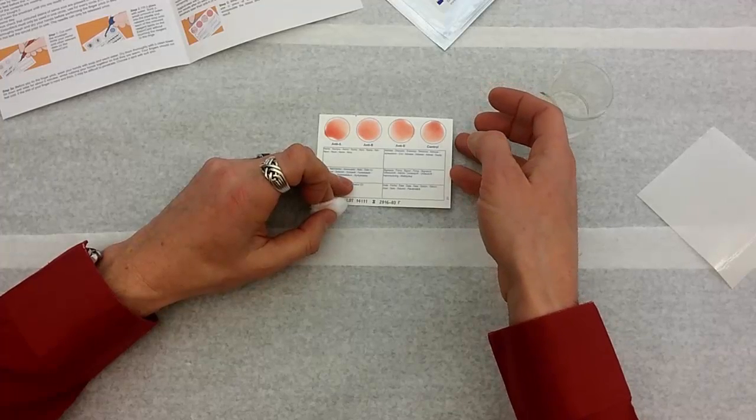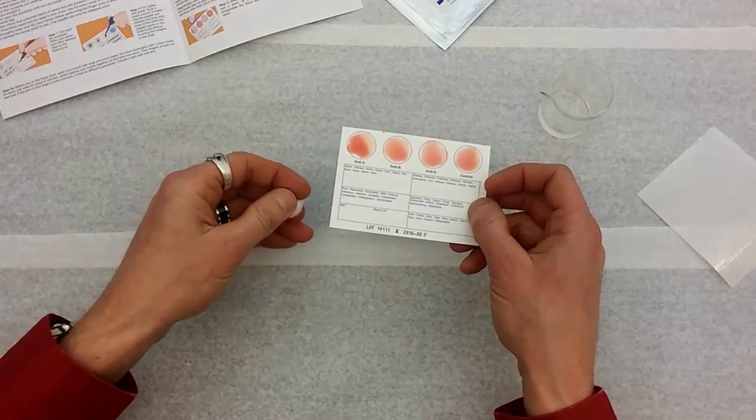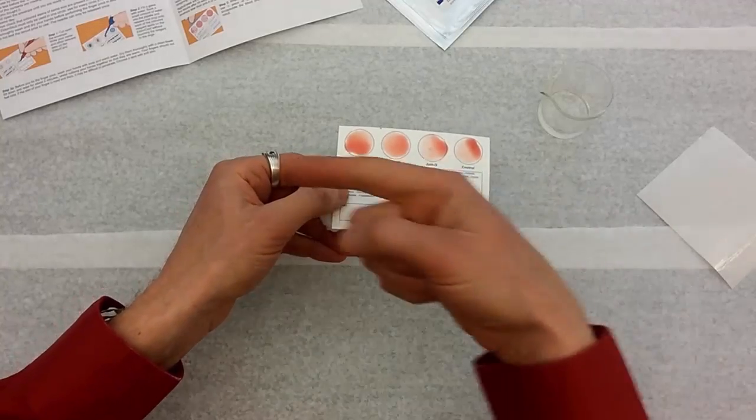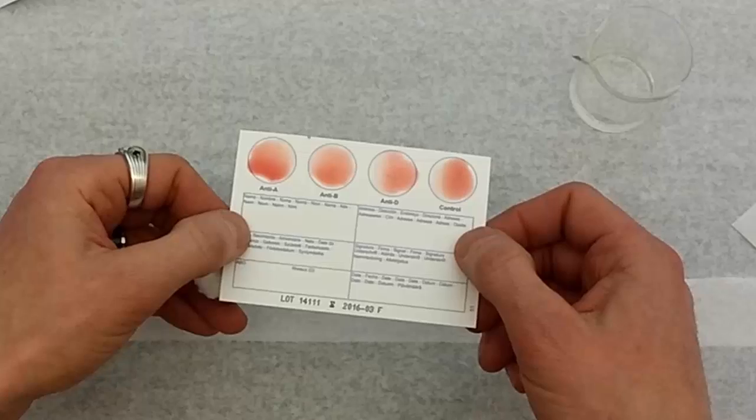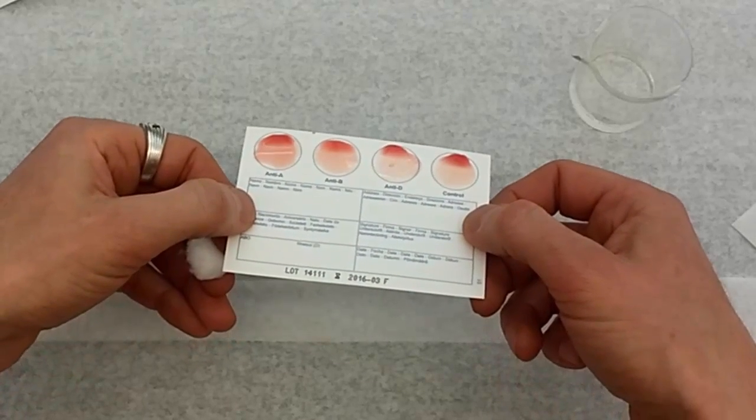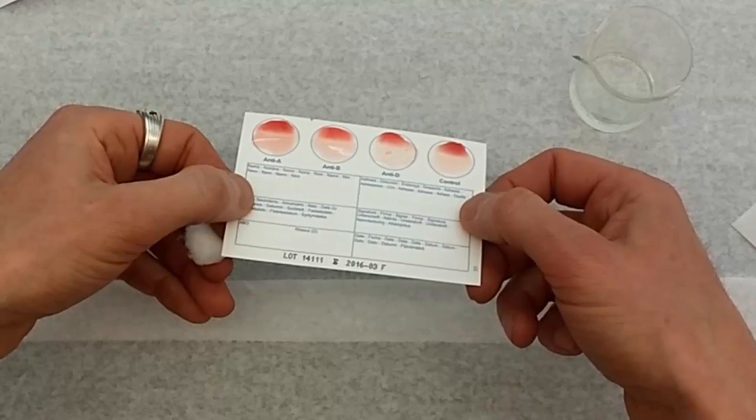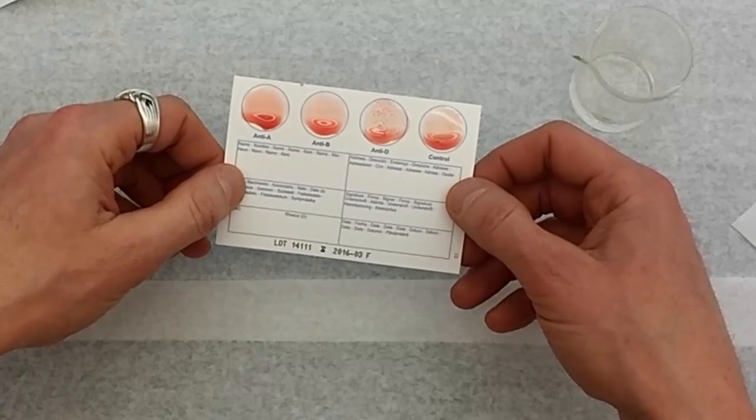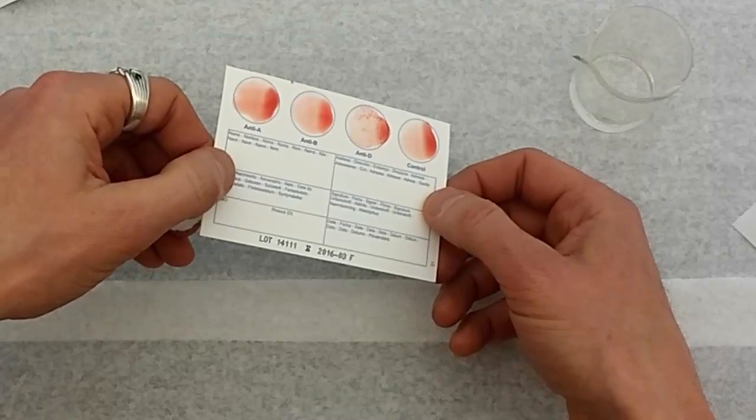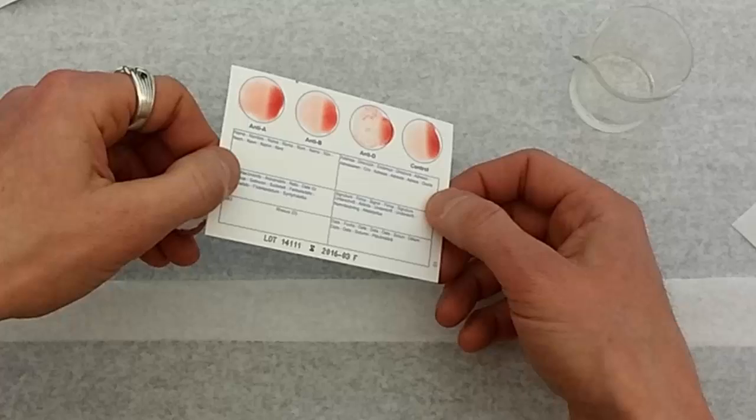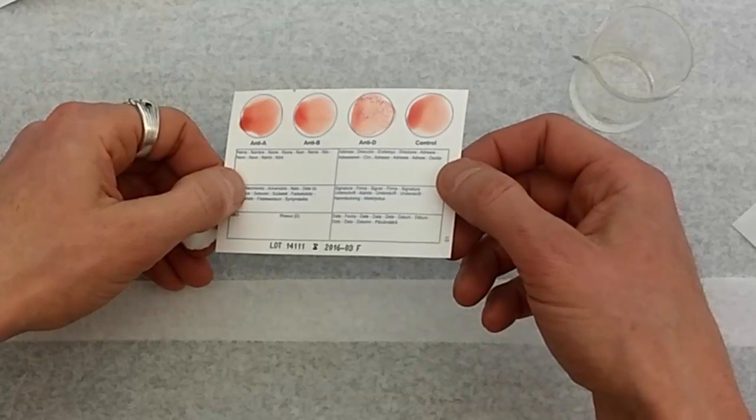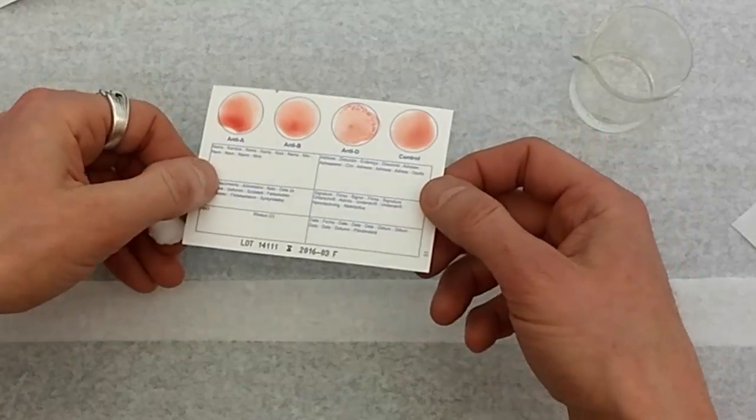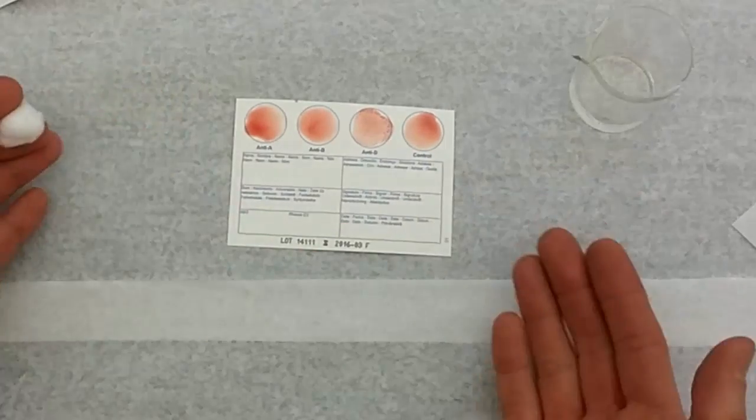Now we need to pick up the card carefully. And you may notice that one of my circles is already starting to react. The next thing to do is we're going to tilt the card slightly in the four directions. And we're going to hold them tilted for 10 seconds in each direction. And now I'm going to make sure the liquid is pretty even. And we're done.